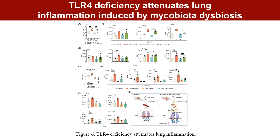Fluconazole had no effect on the lung bacterial loads and production of pro-inflammatory cytokines in the serum and lung in TLR4 knockout mice, suggesting that the translocated E. coli depends on TLR4 to activate inflammation. Collectively, E. coli after fluconazole treatment aggravates lung inflammation during infection.